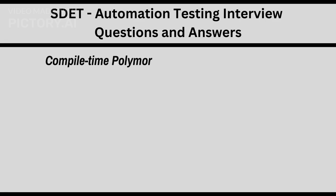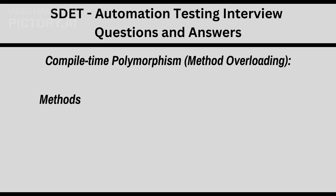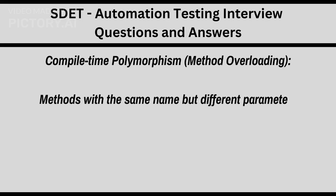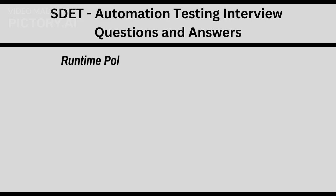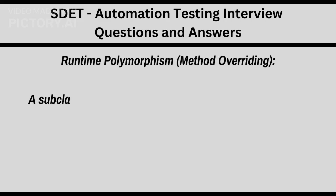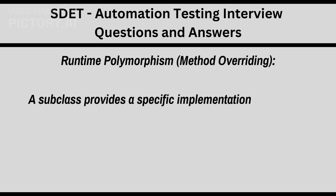Compile-time polymorphism via method overloading involves methods with the same name but different parameters. Runtime polymorphism via method overriding means a subclass provides a specific implementation of a method defined in the parent class.